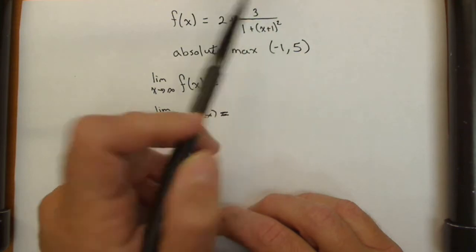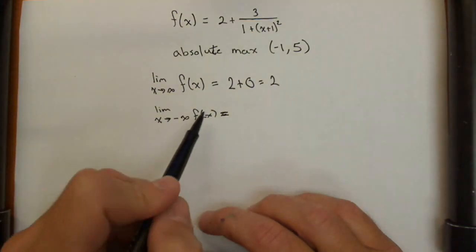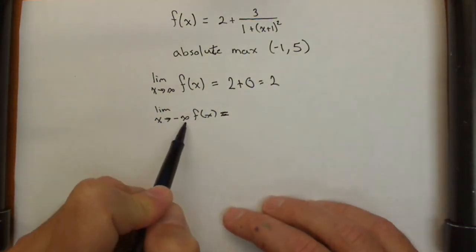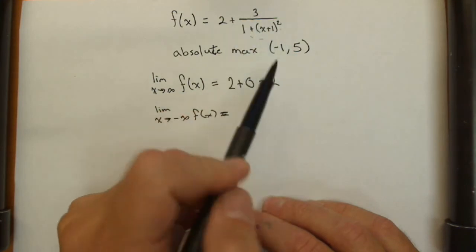That's going to pull this whole piece to 0, so we get 2 plus 0 or 2. As x goes to negative infinity, well because of the square, this is still going to go to positive infinity, pull this whole piece to 0, and it's also going to be 2.